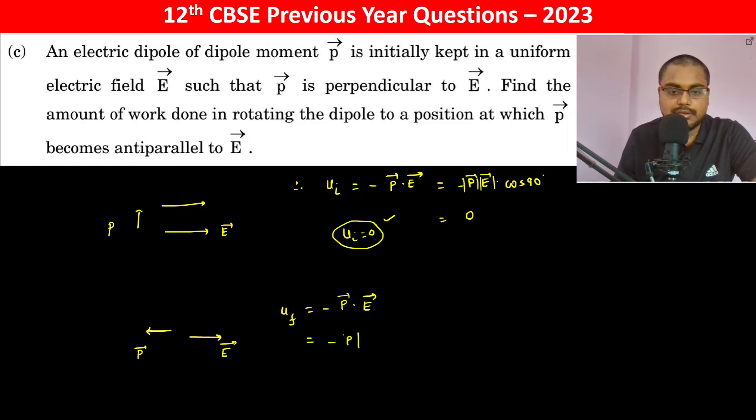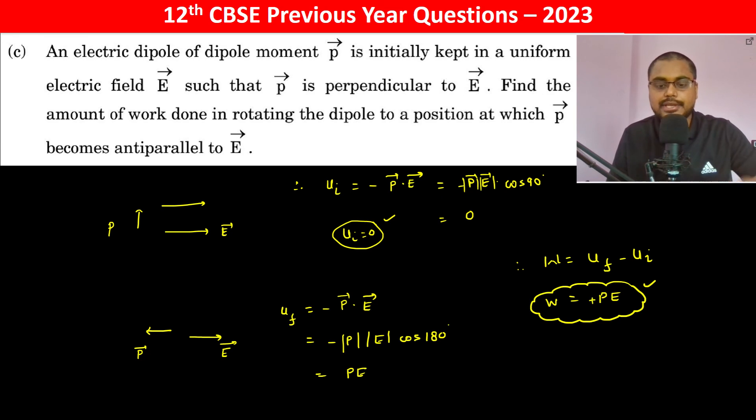This becomes minus P E cos of 180 degree, which is P into E. Therefore, the work done is going to be U final minus U initial, which is equal to PE. So the work done is P into E, which is positive.